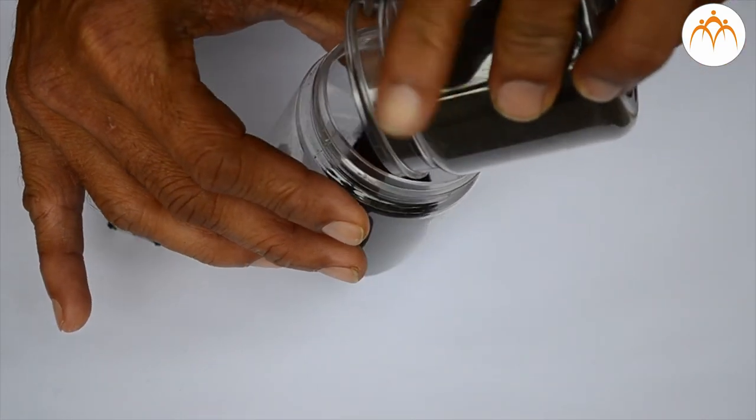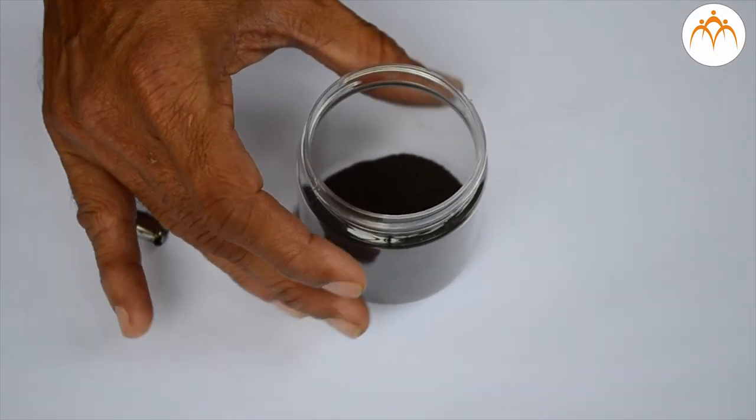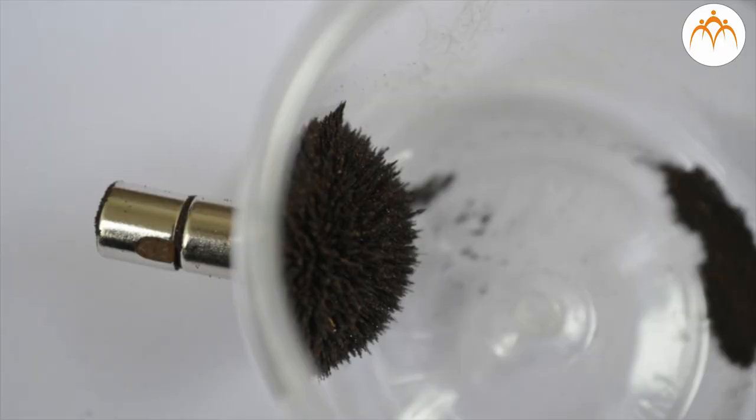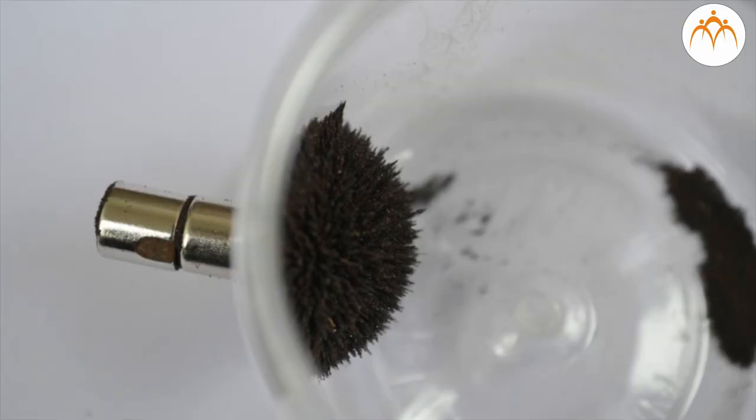If iron powder is placed inside a small transparent container and magnet is kept on the outer wall, nice three-dimensional view of magnetic lines is observed.